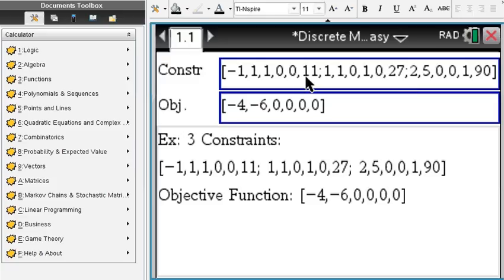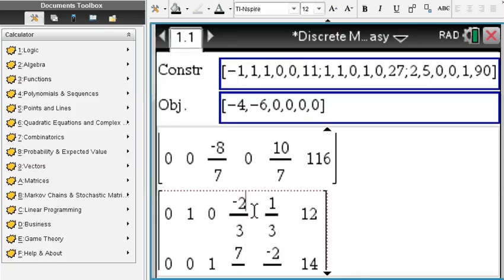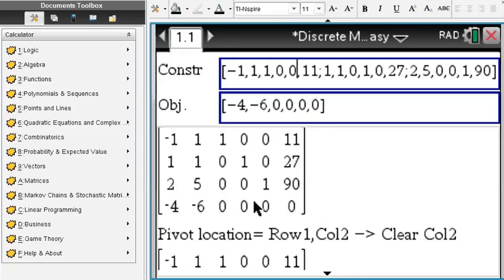Let me show you what it then looks like. It turns into a matrix. If I scroll up all the way, this is what your input looks like in matrix format. The bottom row is the objective function.